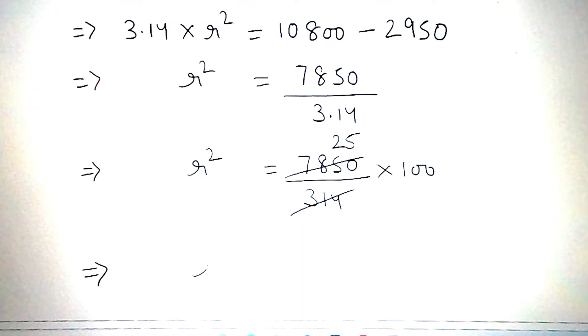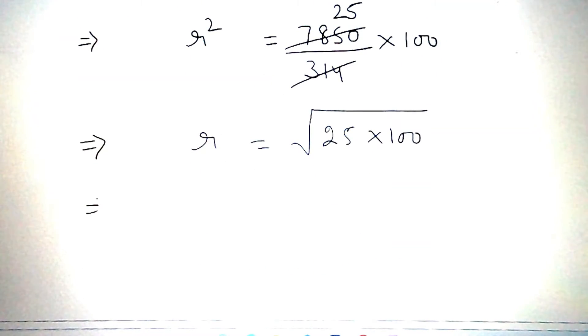R square is equal to 7850 divided by 3.14 into 100. R is equal to root over 25 into 100. Therefore, R is equal to 5 into 5 into 10 into 10.